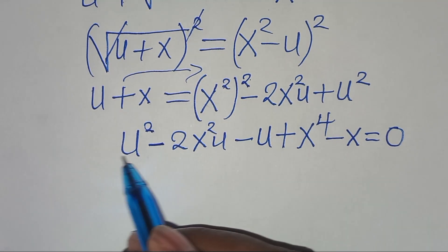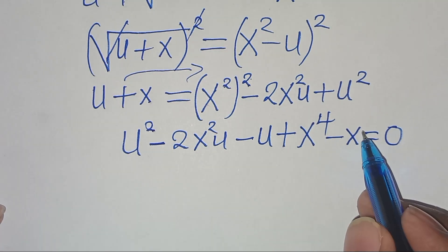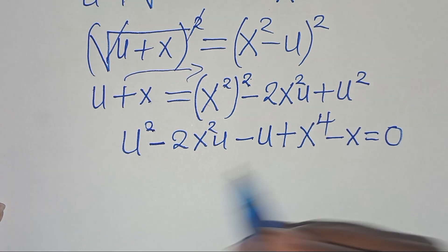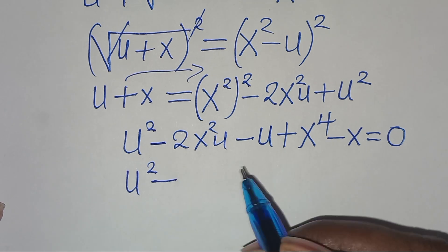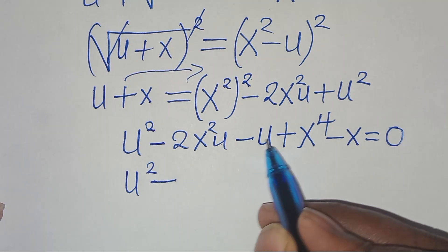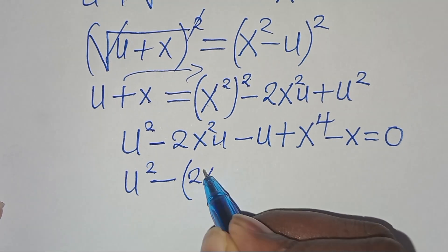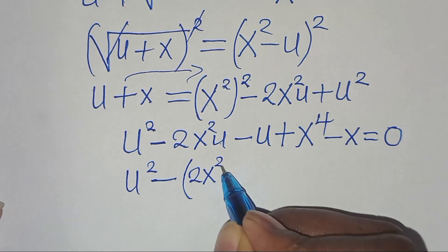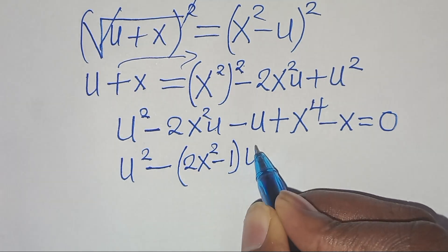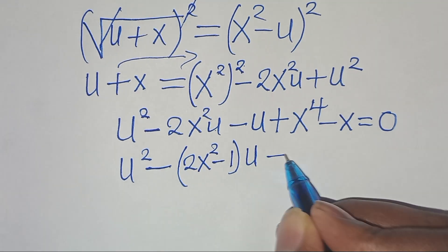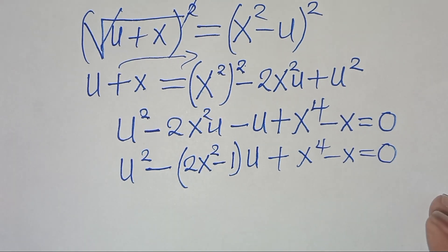From this we form a quadratic equation in u: u squared minus (2x squared + 1)·u plus (x to the power of 4 minus x), equal to 0. This is a quadratic of the form au² + bu + c = 0.